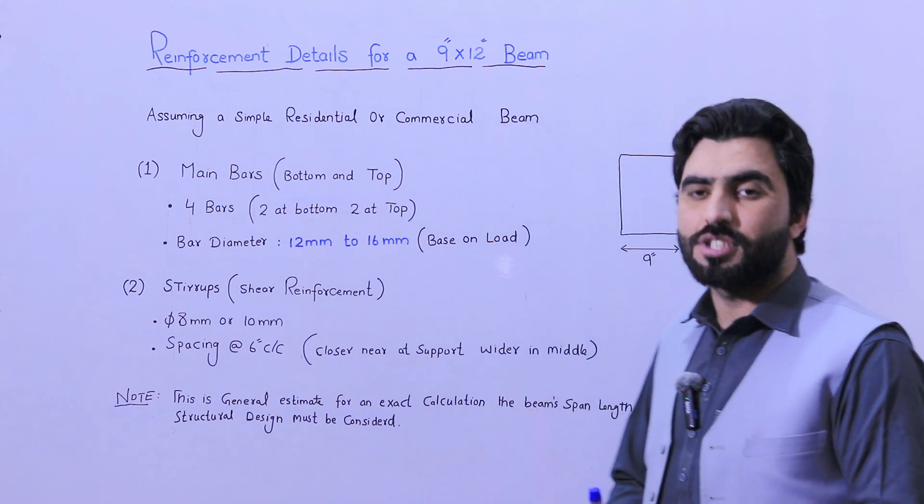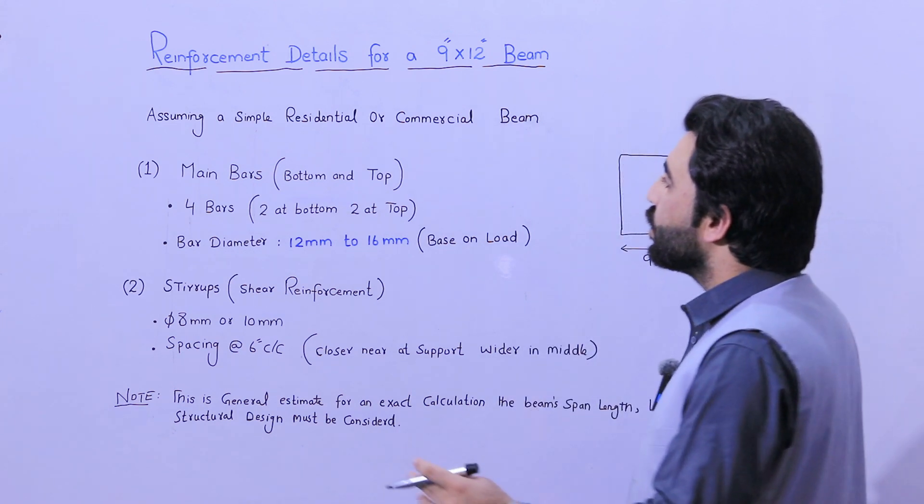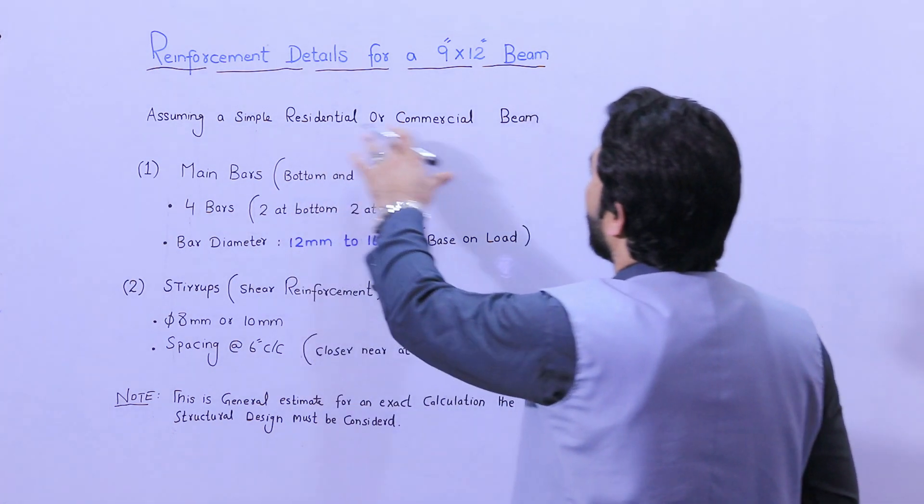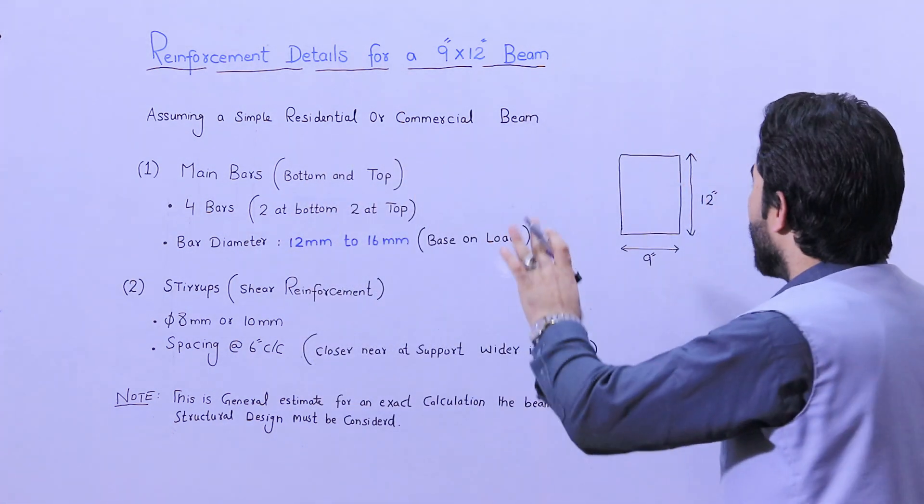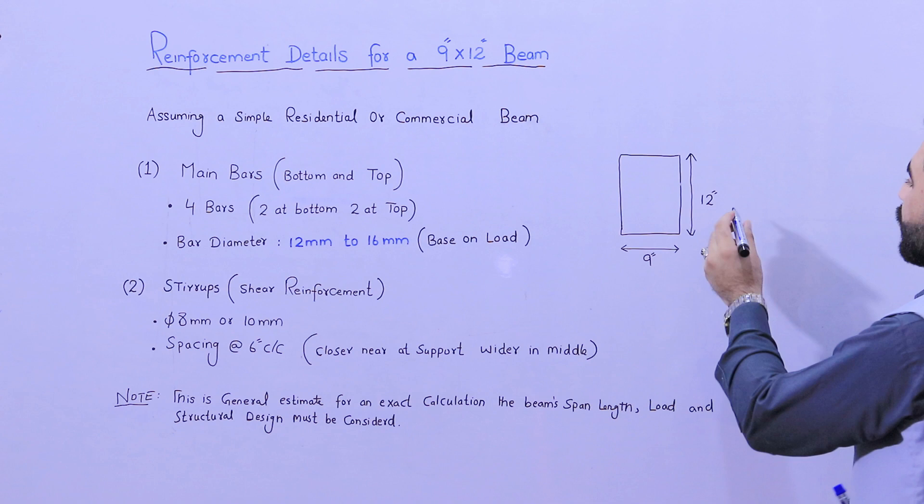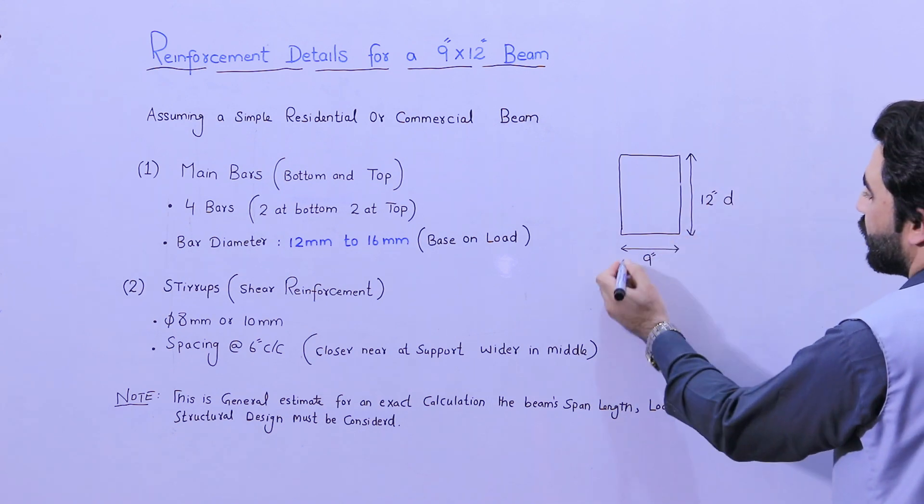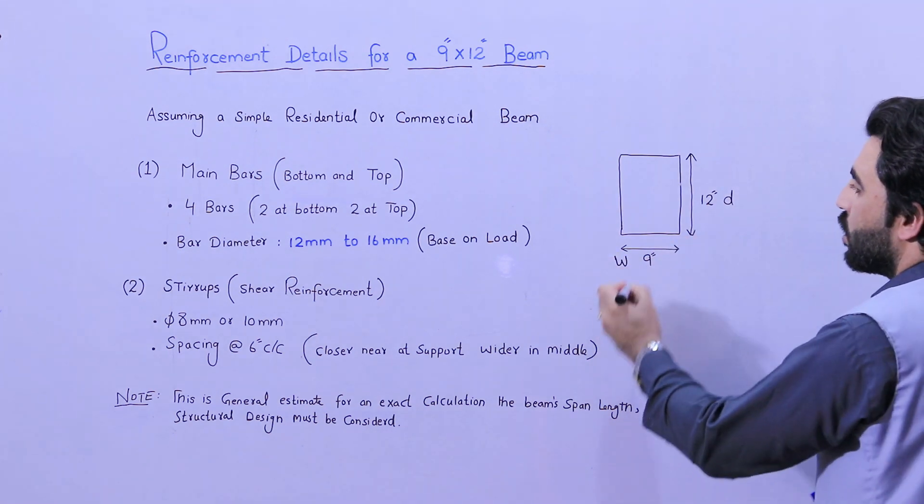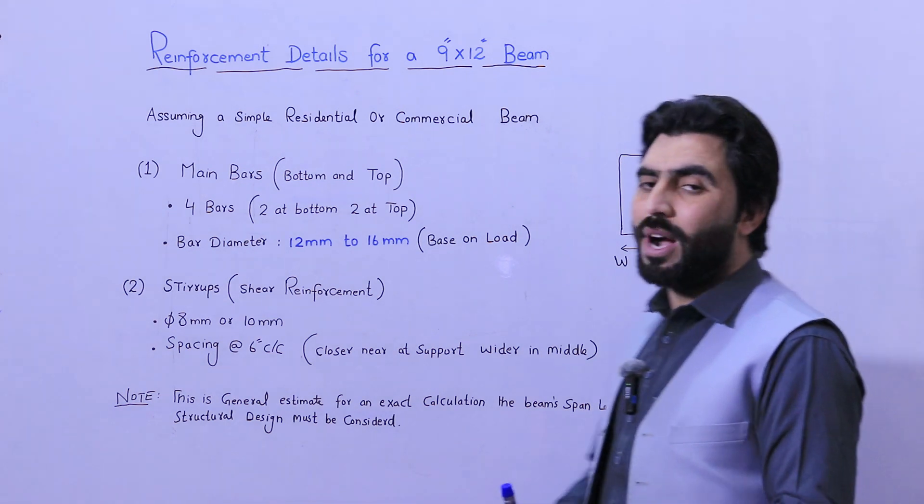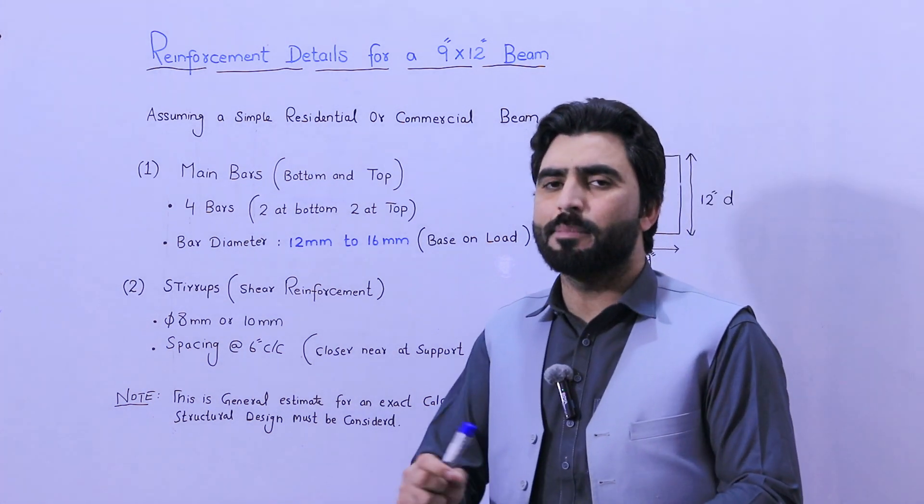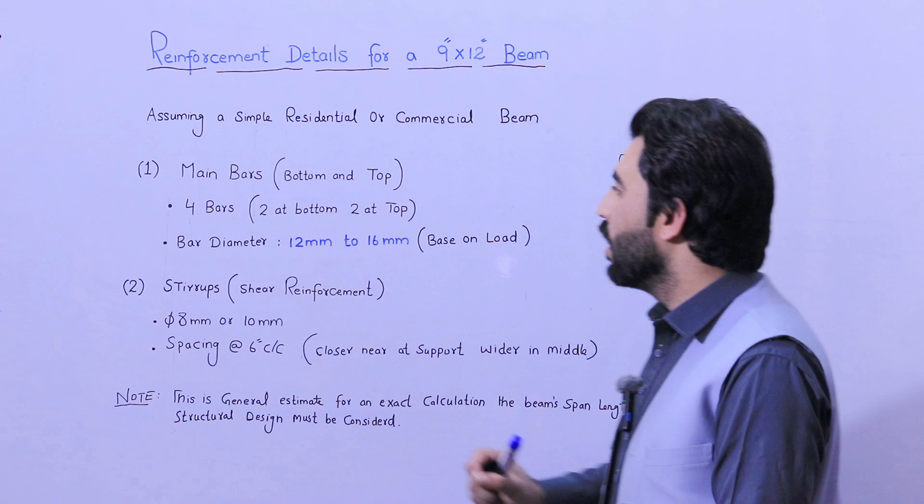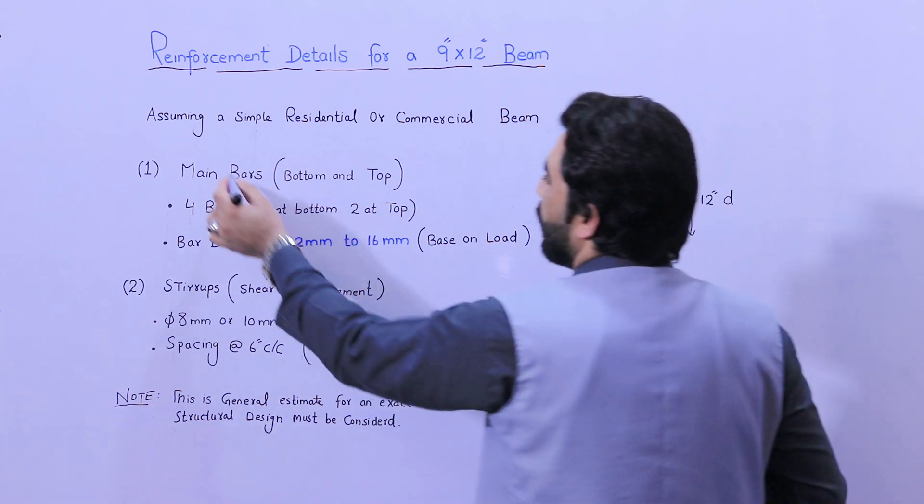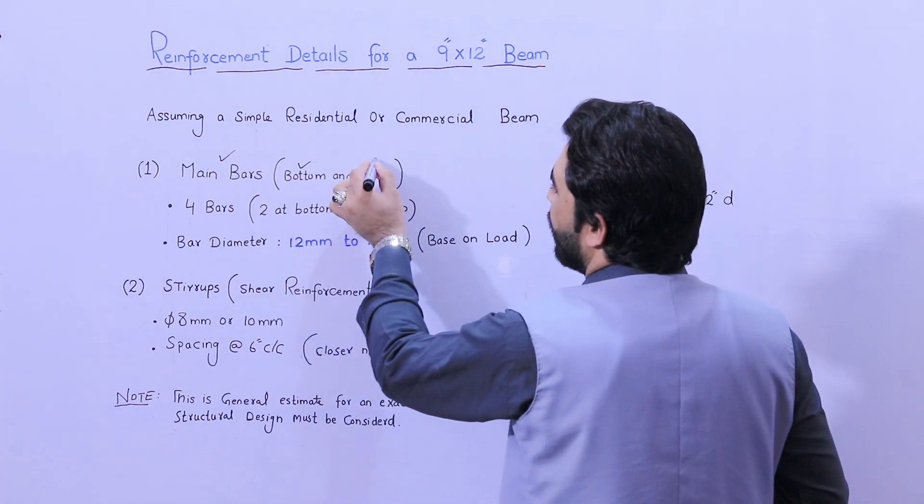Assuming a simple residential or commercial beam which size is 9 by 12 inches - depth is 12 inches, width is 9 inches - how much steel is required? This is not about the calculation; I am guiding you for number of steel rods. The first one is main bars, bottom and top.